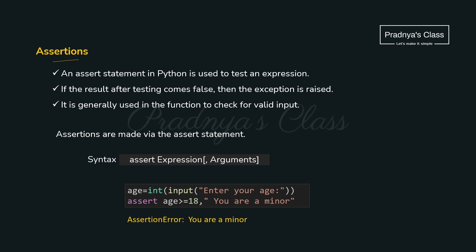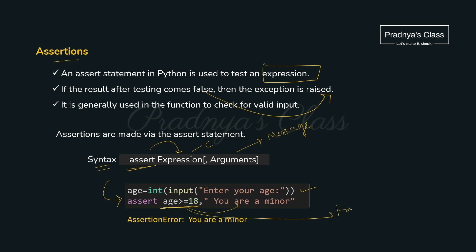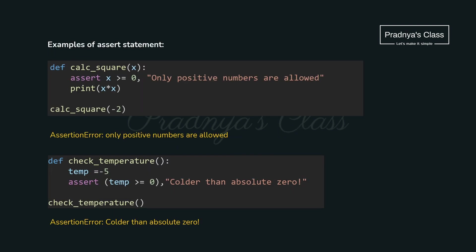There is one more concept — assert. It is generally used to test an expression. When the expression becomes false, the exception will be raised. The syntax is: assert keyword followed by the expression (which is the condition), and an optional message argument for the exception. For example, if the user enters age 10 and the condition is age >= 18, the condition evaluates to false so you get the message 'you are minor.' Generally we use assertions in functions at the beginning or end to verify input values.